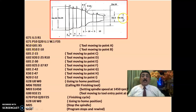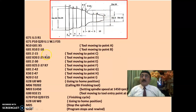N10: G01 X0 Y0 — tool moving to point A. Then G01 X10 Z-10 — tool moving to point B. Then G01 Z-15 — tool moving to point C. Each block moves the tool to the next profile point in sequence.